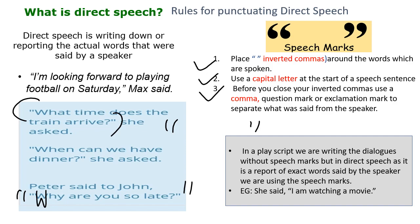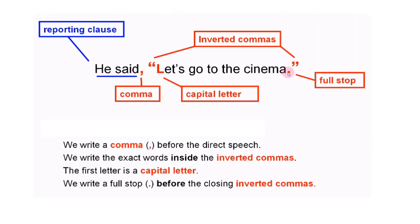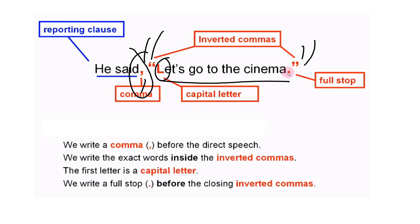Example: she said, I am watching a movie. Put a comma and then begin with the inverted commas. Put a full stop towards the end and then close the inverted commas. Here you can find the direct speech — he said, let's go to the cinema. We write a comma before the direct speech and write the exact words inside the inverted commas. The first letter is a capital letter. We write a full stop towards the end before the closing inverted commas.